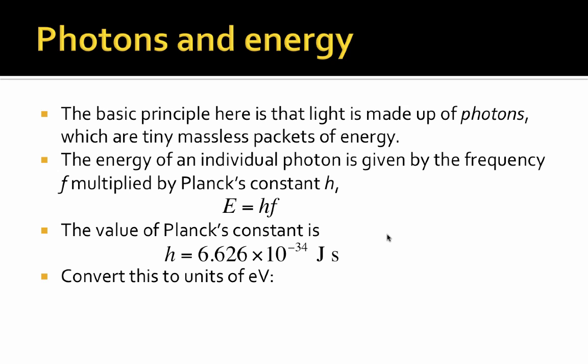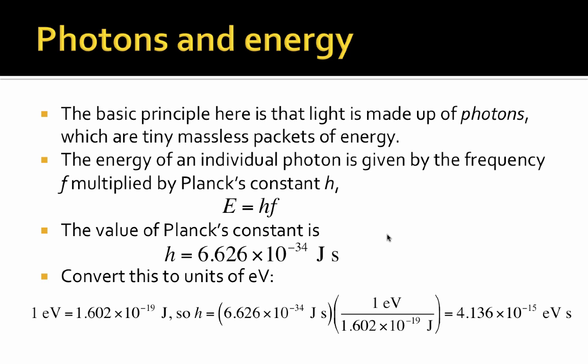If we want to convert to units of eV, it's going to look like this. We know that 1 eV is equal to 1.602 times 10 to the minus 19 joules. So Planck's constant, given in joule seconds, times the conversion factor of 1 eV to 1.602 times 10 to the minus 19 joules, gives us 4.136 times 10 to the minus 15 eV seconds. So that's the value of Planck's constant in eV seconds. You'll find it fairly convenient to get your answer in eV seconds, actually.